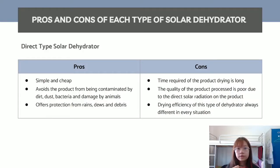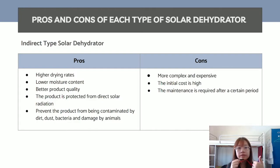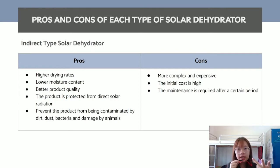For the direct type solar dehydrator, its pros are that it is simple and cheap, avoids contamination by dirt, dust, and bacteria, protects from animal damage, and offers protection from rain and debris due to the enclosure. On the downside, drying time is long, product quality is poor due to direct solar radiation, and drying efficiency varies with climatic conditions. For the indirect type, it has a higher drying rate, lower moisture content, and better product quality compared to the direct type. The product is protected from direct solar radiation and contamination by dust, dirt, and bacteria.